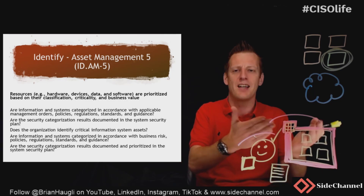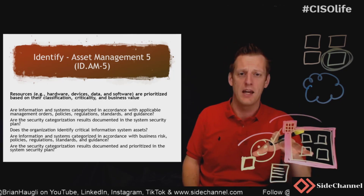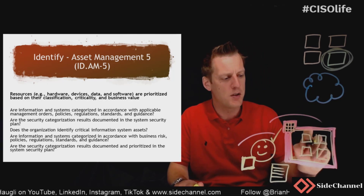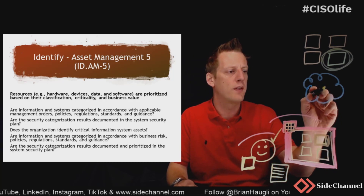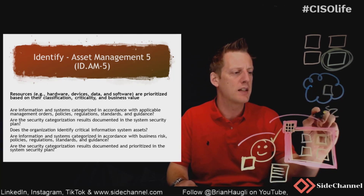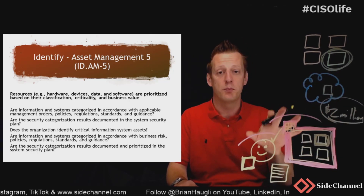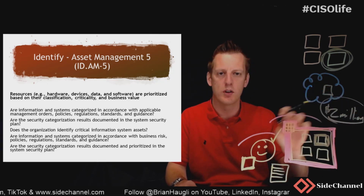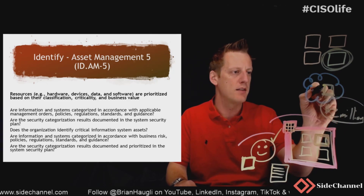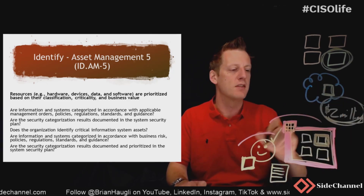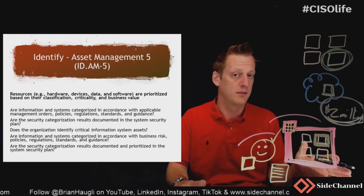Are your resources lined up against those? Does your organization identify what critical information system assets exist? For example, if the system running inside your on-prem data center or your cloud is making you $2 million a day in business, perhaps based on the criticality of that revenue stream, you should be looking at and protecting that system — or all the systems that make up that business driver — more so than one that provides significantly less value.